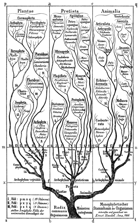In biology, kingdom is the second-highest taxonomic rank, just below domain. Kingdoms are divided into smaller groups called phyla.